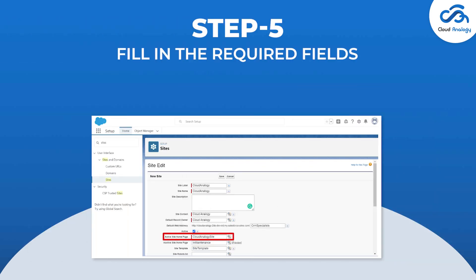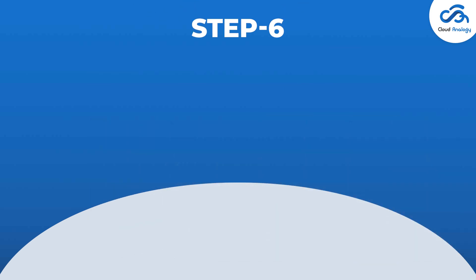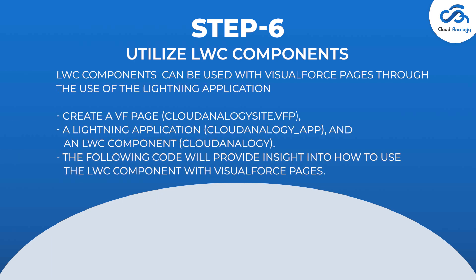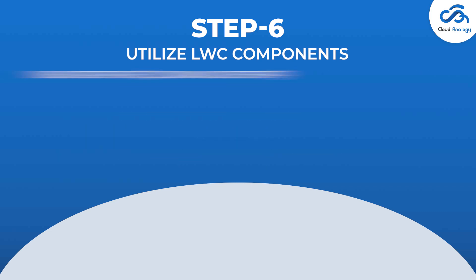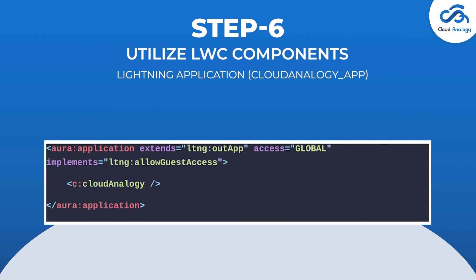Step 5: Fill in the required fields to provide the necessary information related to your public site. Select the search icon in front of the Active Site homepage. Select the Visualforce page that you will use for your site and save the configuration. Step 6: Utilize LWC components. LWC components can be used with Visualforce pages through the use of a Lightning application. Create a VF page, a Lightning application, and a LWC component. The following codes will provide insights into how to use the LWC component with Visualforce page.